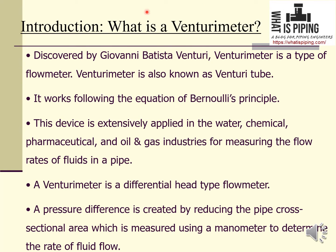The principle of the venturimeter was discovered or invented by Giovanni Battista Venturi, and based on his name this mechanical device is known as a venturimeter. A venturimeter is a type of flow meter — it is used to measure flow and is also known as a venturi tube. It works following Bernoulli's principle and is extensively applied in water, chemical, pharmaceutical, and oil and gas industries for measuring the flow rates of fluids inside a pipe.